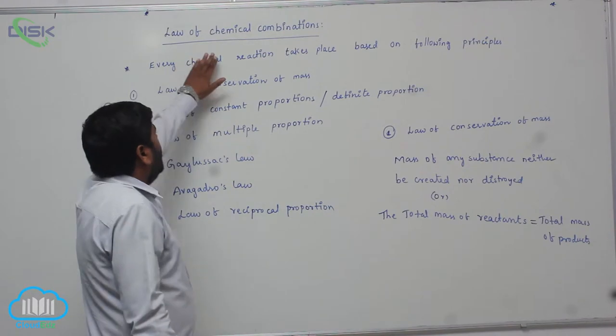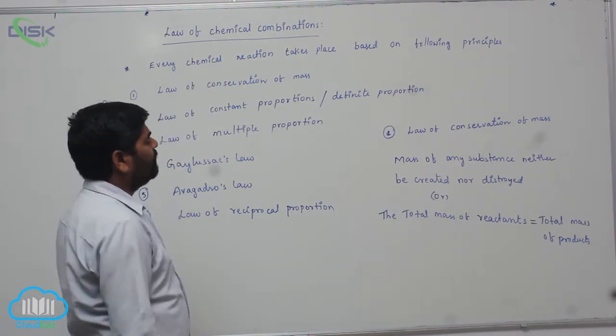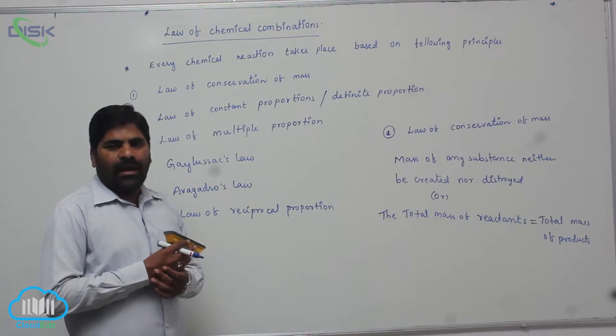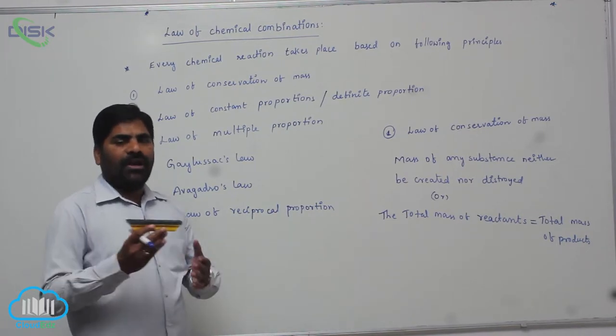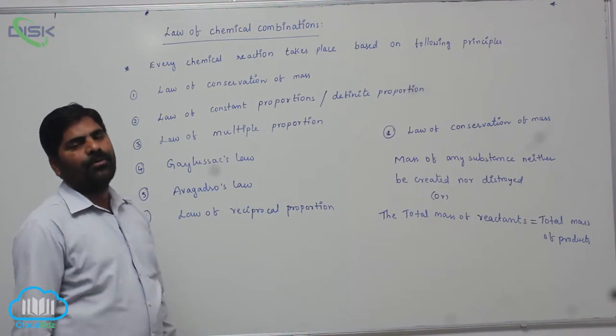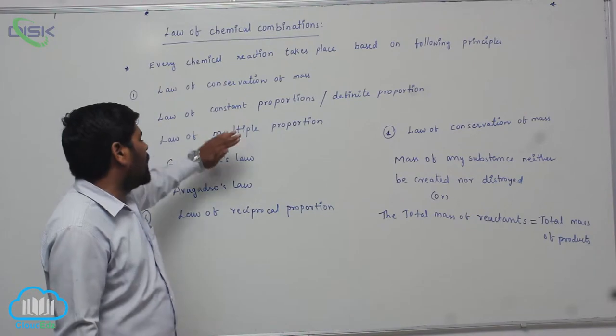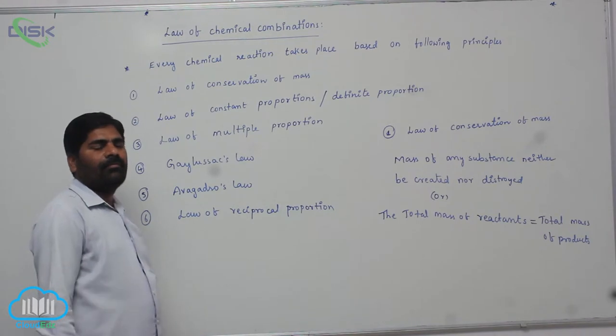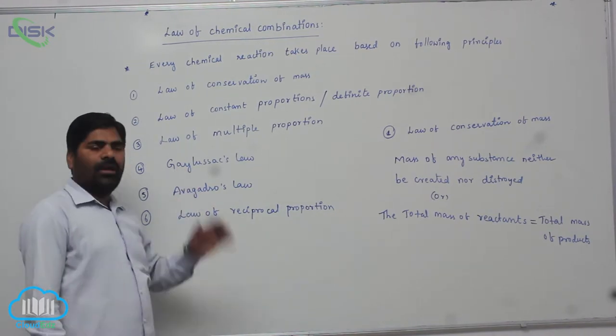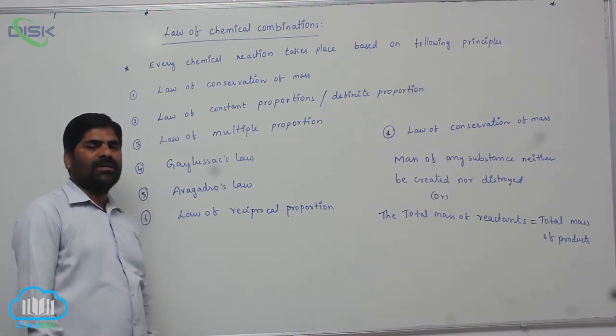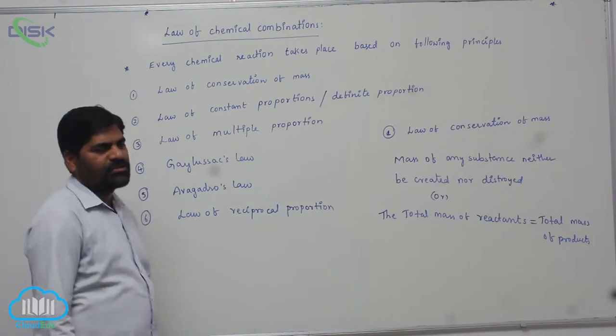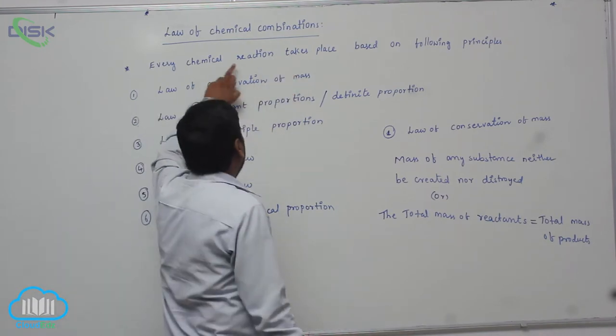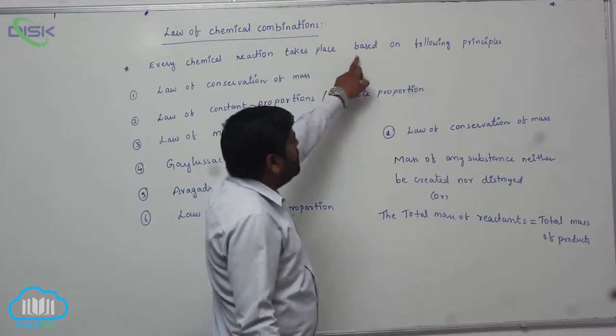Now is law of chemical combinations, means what stoichiometric ratio of elements are combined, what ratio of products are formed, mainly discussed in this particular area or how a chemical reaction takes place based on some particular principle. Without a principle a chemical reaction not takes place, means the reactant not converts into products. Therefore every chemical reaction takes place based on following principles.